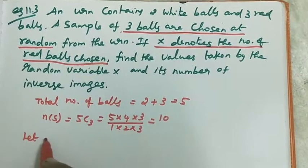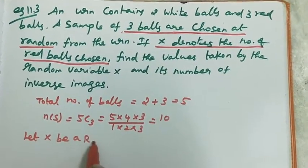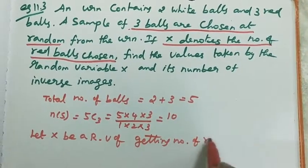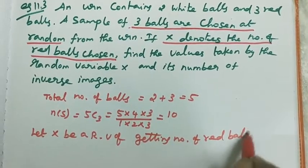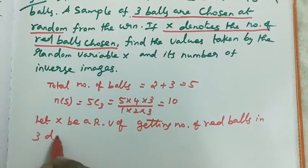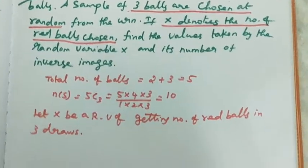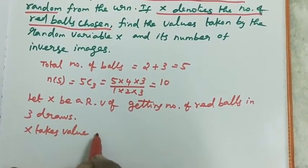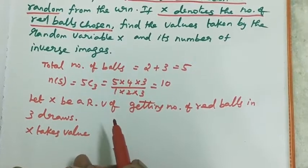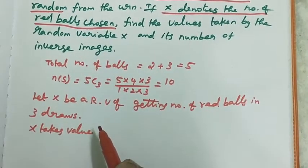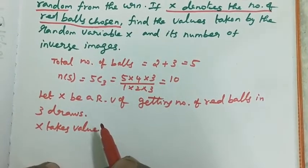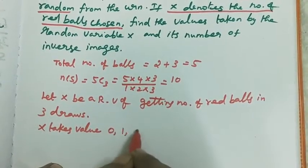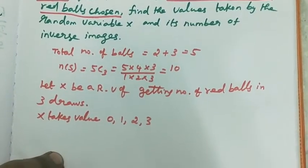Let x be the random variable of getting red balls. In the 3 balls drawn, we could have 0 red balls, 1 red ball, 2 red balls, or 3 red balls. So x takes the values 0, 1, 2, 3. Now we go to the table.